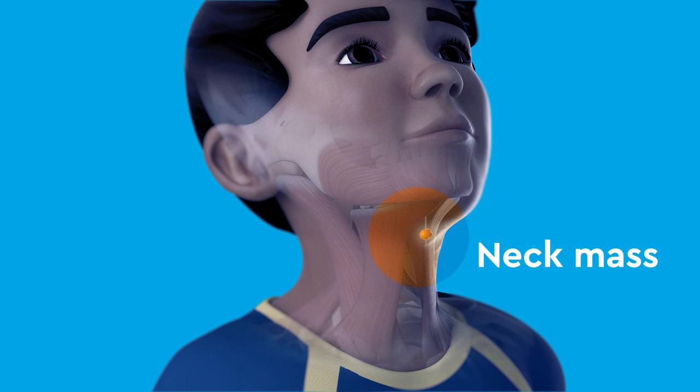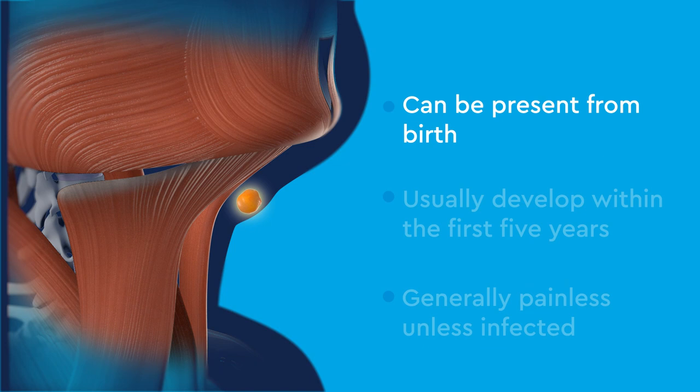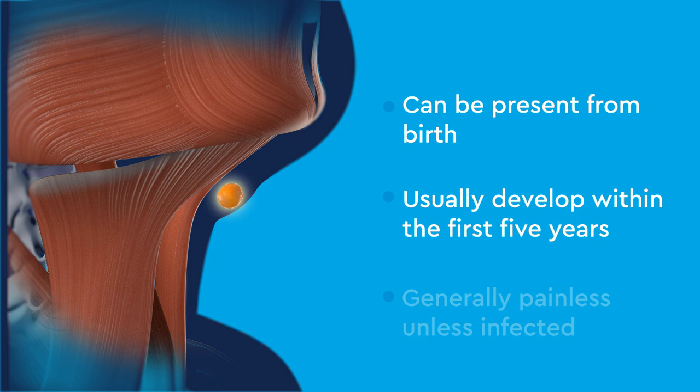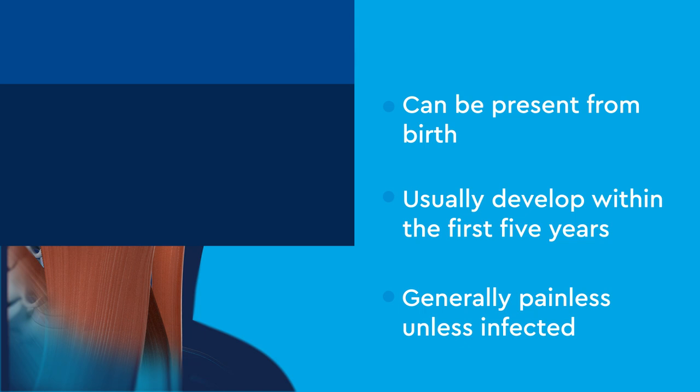A neck mass is a bump or lump on the neck. Neck masses can be present from birth, but usually develop within the first five years of your child's life. They are generally painless unless infected. There are two types of neck masses: solid or cystic.